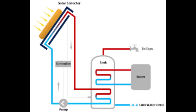Solar energy can also be used to heat water. A flat plate collector is used to absorb the sun's energy to heat the water. The water circulates throughout the closed system due to convection currents, and tanks of hot water are used as storage.